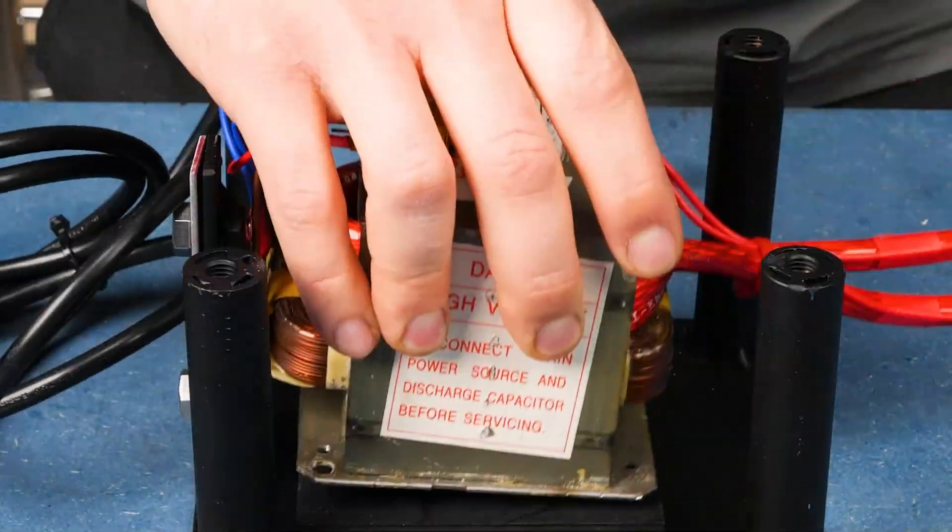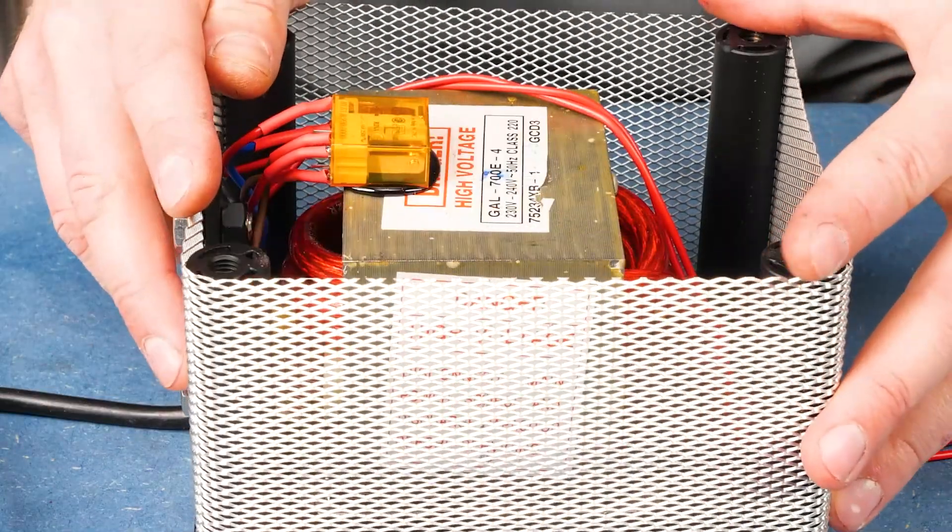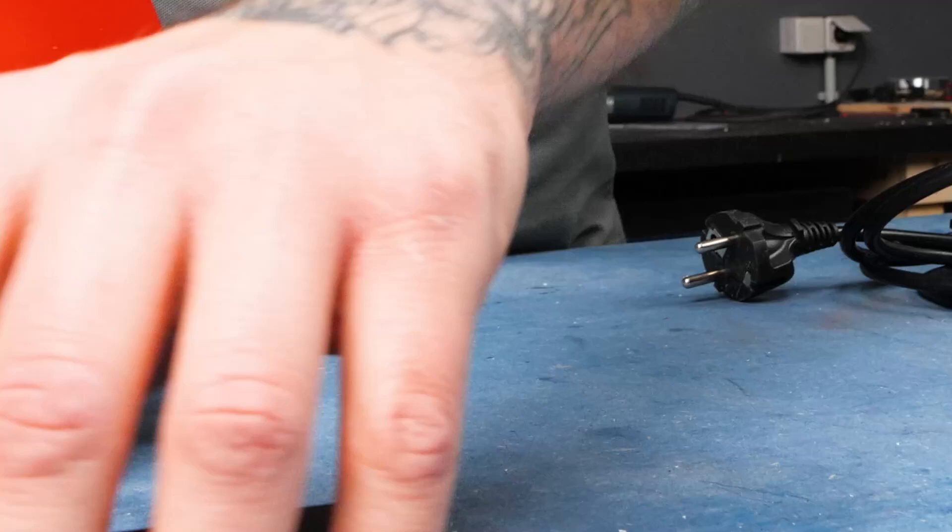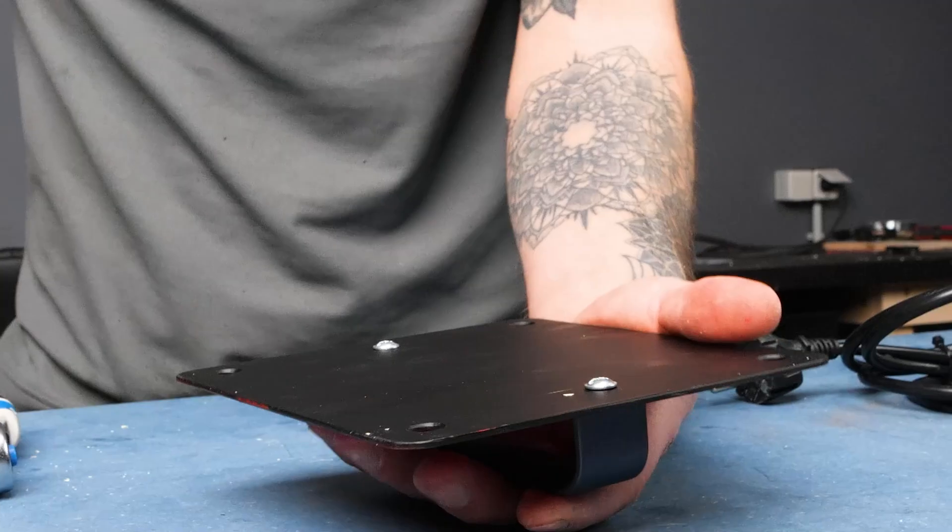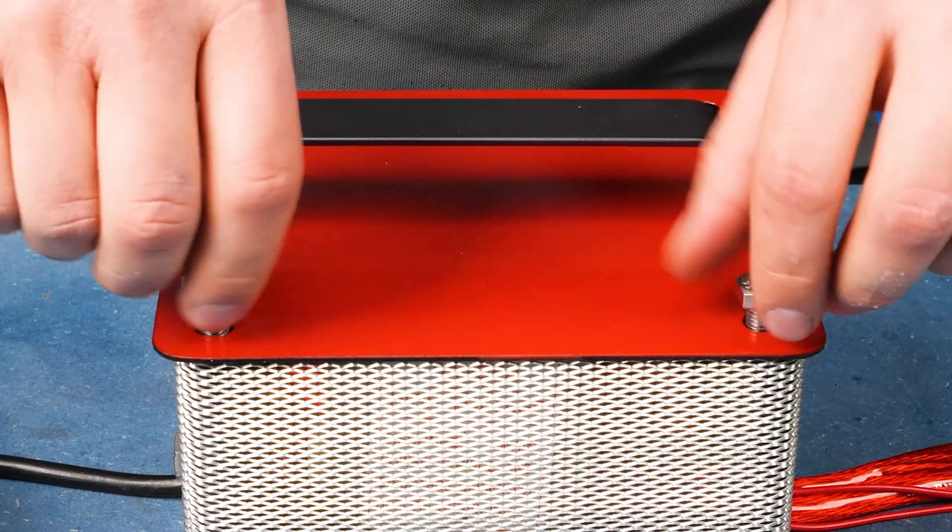Then, I fix the transformer inside the casing and screw a handle to the cover. Finally, I secure the cover over the casing.